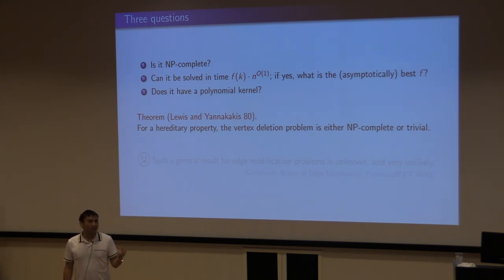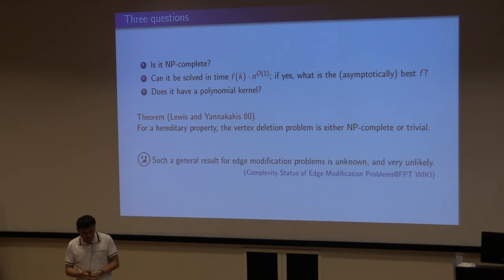The celebrated theorem by Lewis and Yannakakis, before most of you were born, says if the operation is vertex deletion, it's pretty much either NP-complete or trivial. Here by trivial, we mean there are only finitely many graphs that have this property. Otherwise it is NP-complete. They also pointed out that such a general result for edge modification problems were very unlikely. And after 40 years, it is still very unlikely.